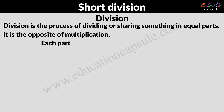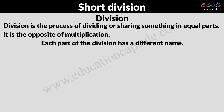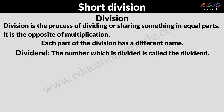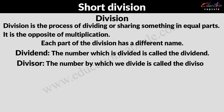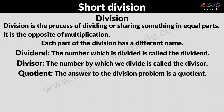Each part of the division has a different name. The first one is the dividend — the number which is divided is called the dividend. Next is the divisor — the number by which we divide is called the divisor. Then there is the quotient — the answer to the division problem is the quotient.